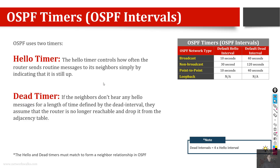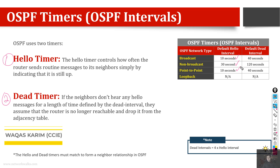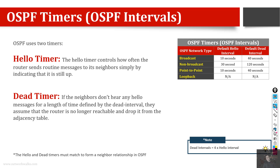OSPF mainly has two timers: the first is called the hello timer and the second is called the dead timer. The hello timer controls how often the router sends hello messages to its neighbors, simply indicating that it is up and still working. This applies to broadcast, non-broadcast, and point-to-point network types. There are multiple OSPF interface or topology types, and the intervals are usually different, especially for the non-broadcast type. We will discuss these different network types in the next parts of this OSPF interview preparation series.